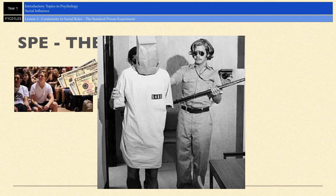The guards were given uniforms, dark reflective sunglasses, handcuffs, and a truncheon, and were instructed to run the prison without using physical violence. The prisoners, on the other hand, were stripped and given a numbered smock to wear — as you can see in the picture — and chains were placed around their ankles.